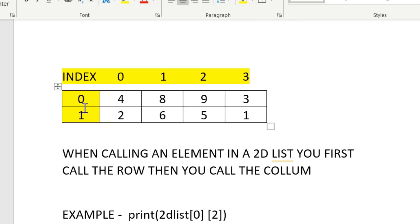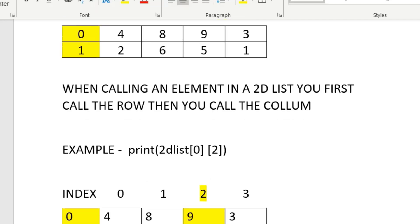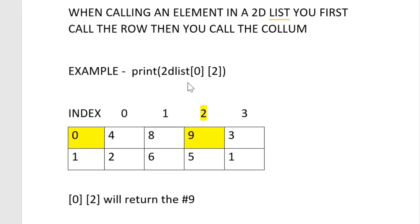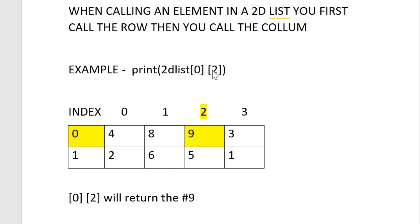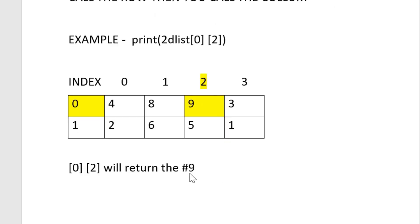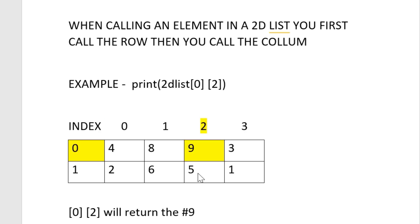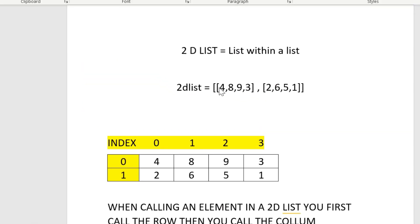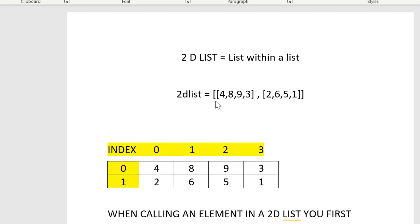When you call for an element in a 2D list, you first call the row — this is row zero, this is row one — and then you call the column. In this example here, I created a print statement and I'm looking for the element at location zero, two. So this is row zero, this is column two, and this would return the number nine as your output.